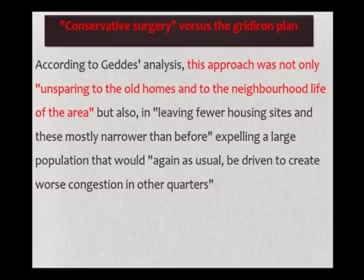Geddes criticised the gridiron plan tradition as dreary and conventional, failing to address in the long term the very problems it purported to solve. He felt it was monotonous, stringent, and could not organically grow to allow conservative surgery. When someone did not fit within the gridiron's squares, they were driven out, forcing them to create slums and tenements outside the layout. It is very important to ensure all classes of society are encompassed within the neighbourhood, such that there is no barricade between them.